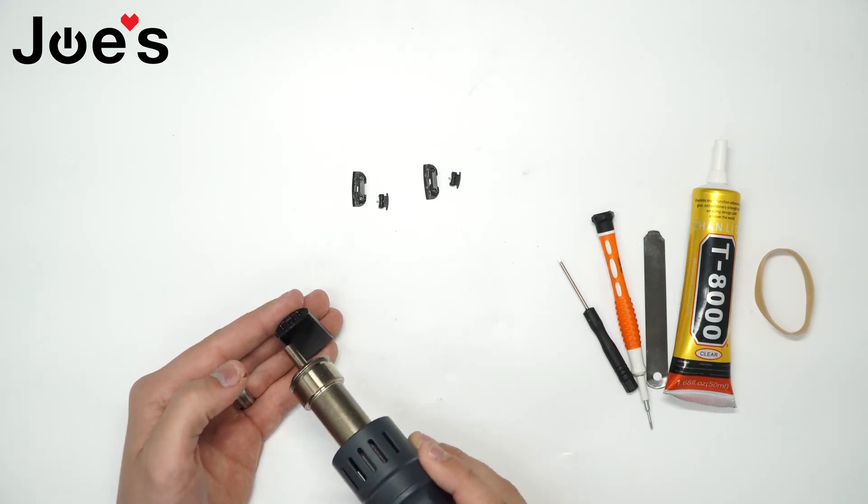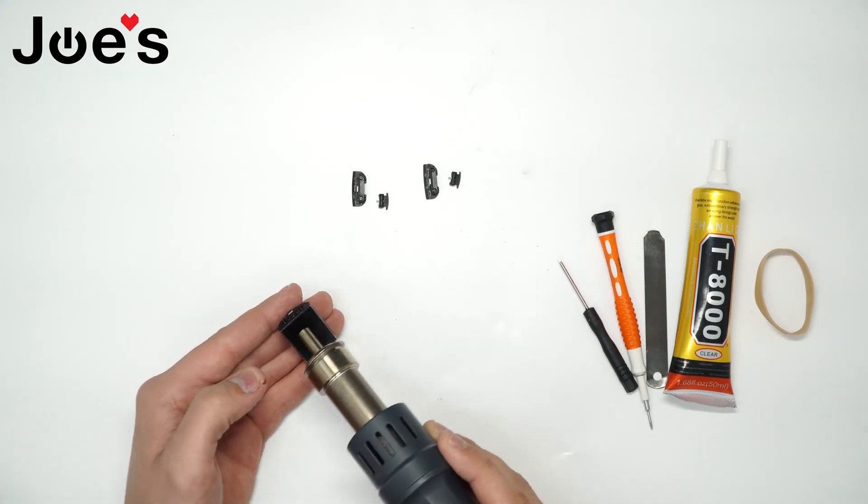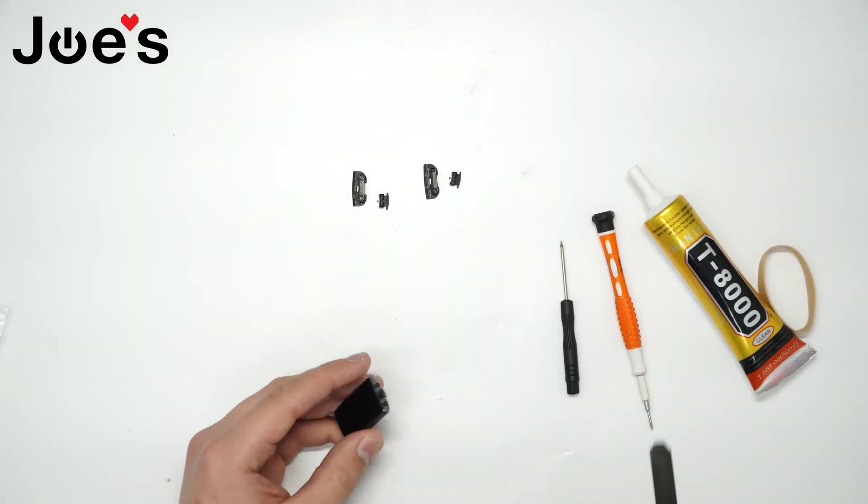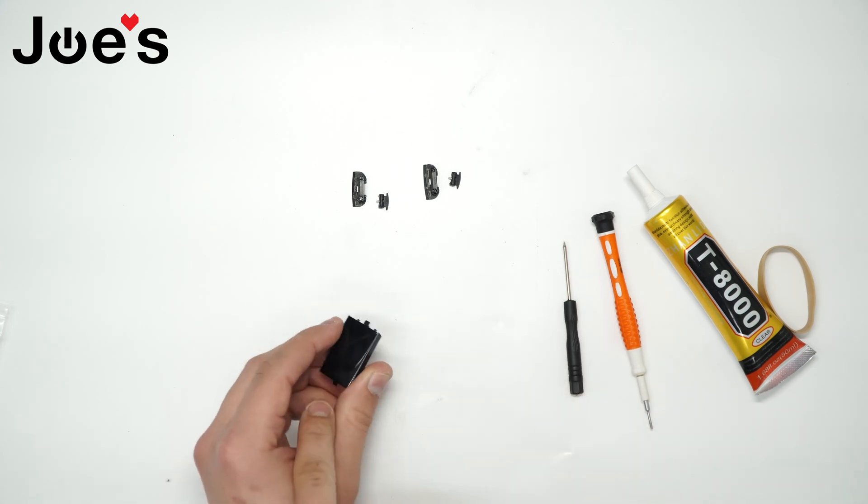Don't heat it up too much, just enough to get the screen up. I like to start from the opposite side of the Fitbit logo. Usually where the Fitbit logo is at, that's where the ribbons are at.